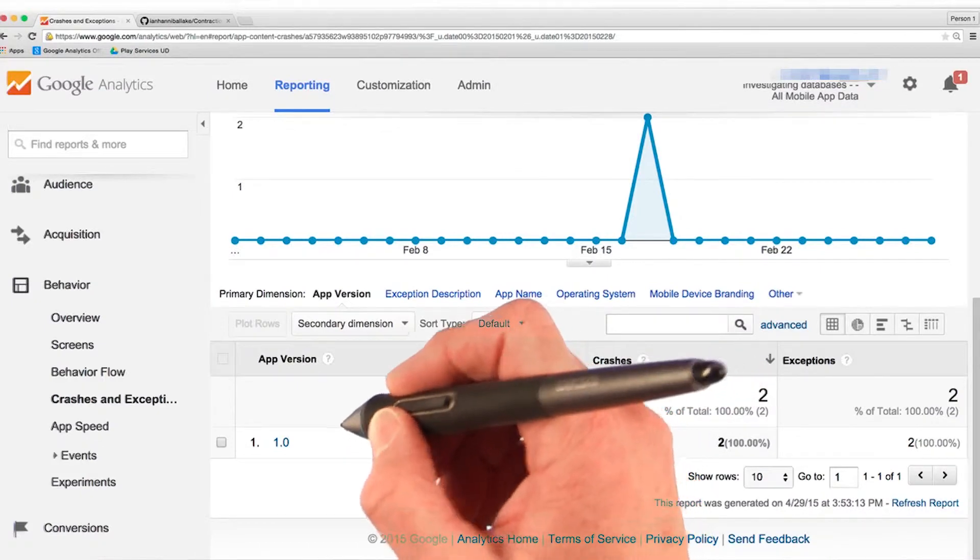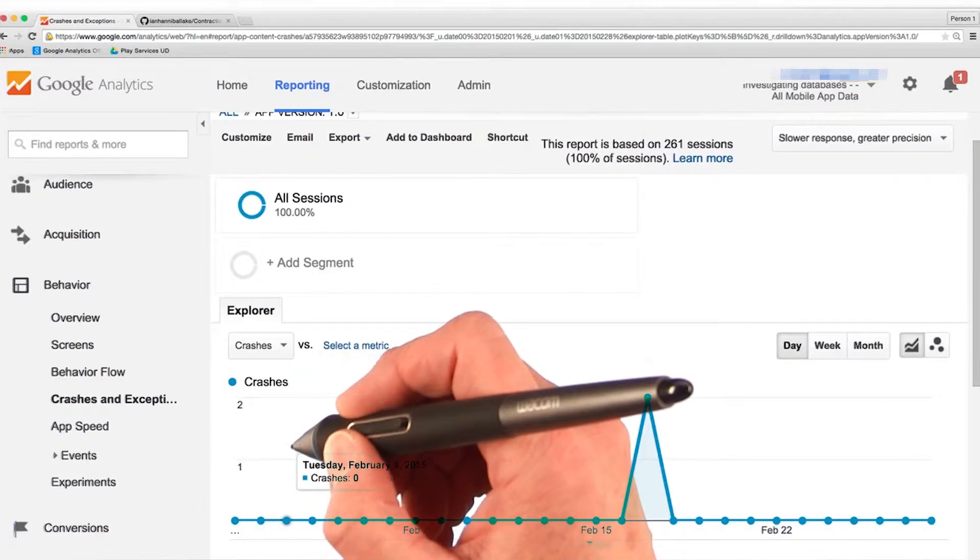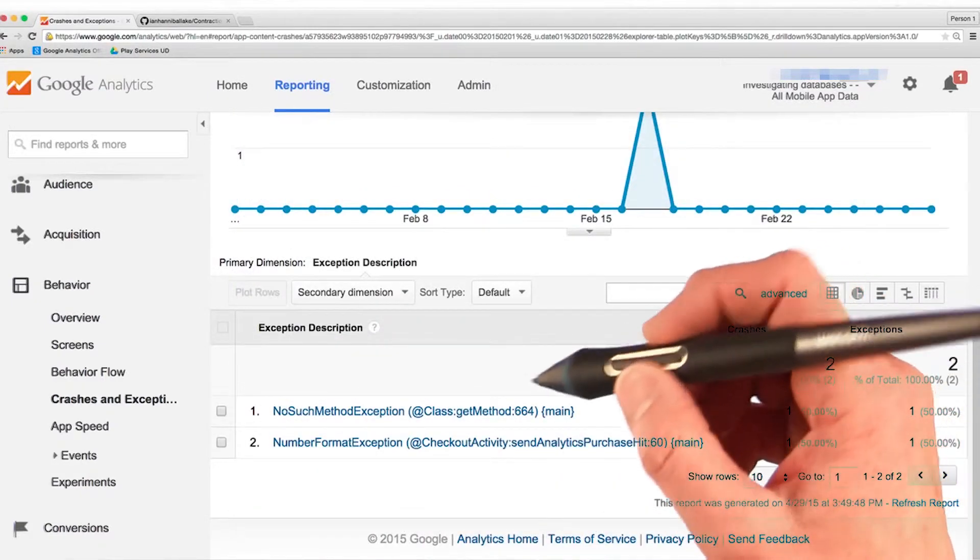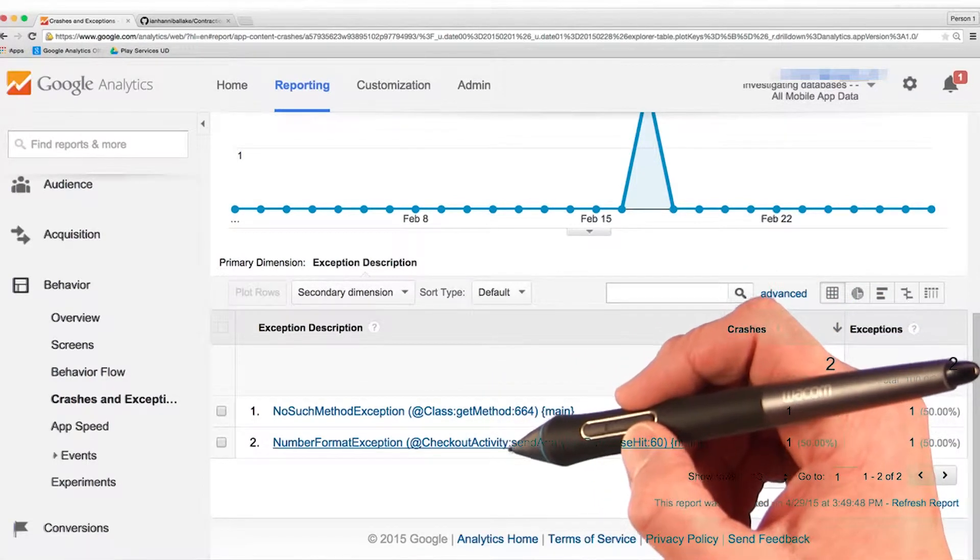The exceptions are grouped by the app version number, and you could drill down into different version numbers. I had a no such method exception and a number format exception.